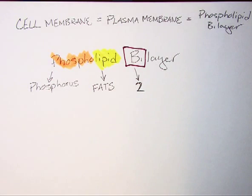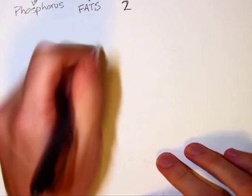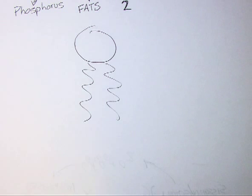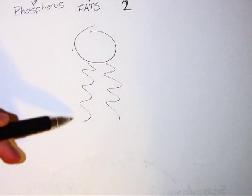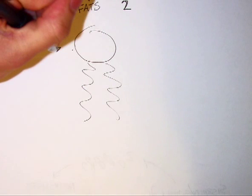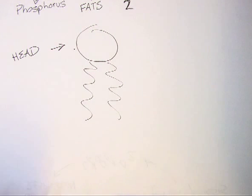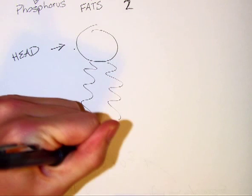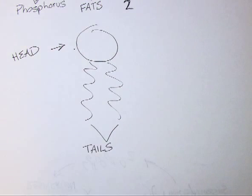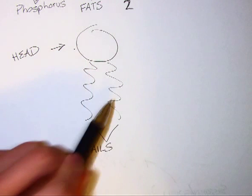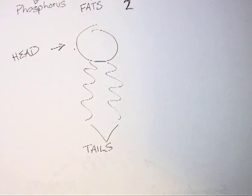The phospholipid bilayer is made up of phospholipids. A phospholipid looks like this: a circle on the top and squiggly lines on the bottom. The circle part is what we refer to as the head, and those two squiggly lines are what we call the tails. You can think of it like your body — you have a head and two legs.